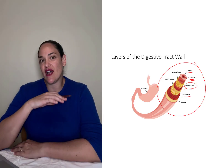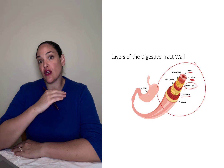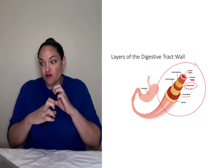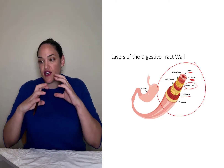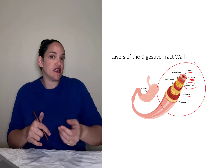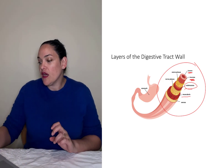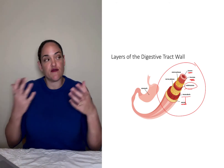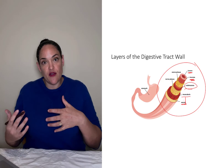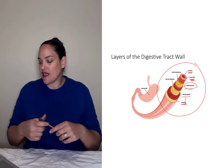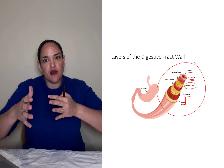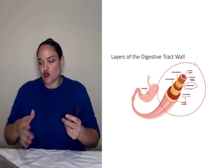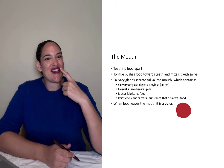One layer superficial to the submucosa is the muscularis layer, where we find smooth muscle — specifically longitudinal muscle and circular smooth muscle. This muscle layer helps change the diameter of the digestive tract tube to facilitate different digestive processes. The most superficial layer is the serosa, which helps bind the digestive tract to nearby structures, anchors it in place, and provides a little fluid motion as the digestive tract moves.